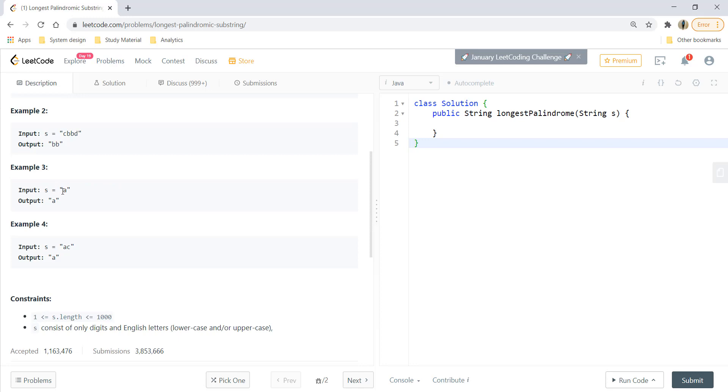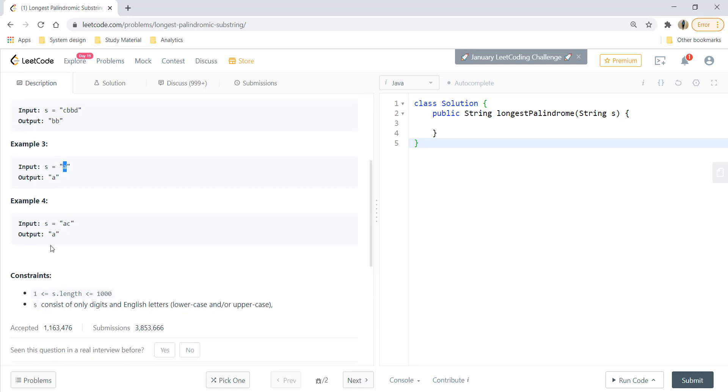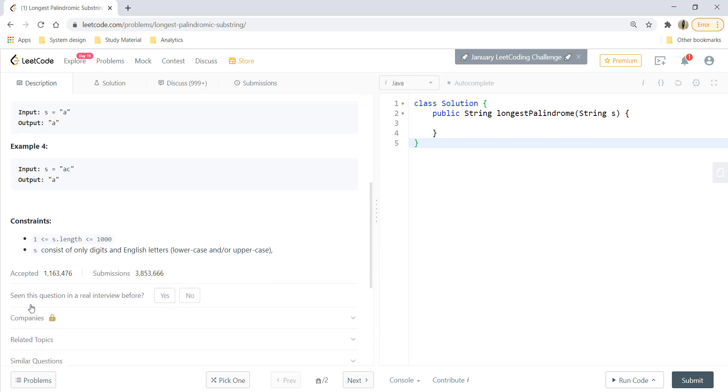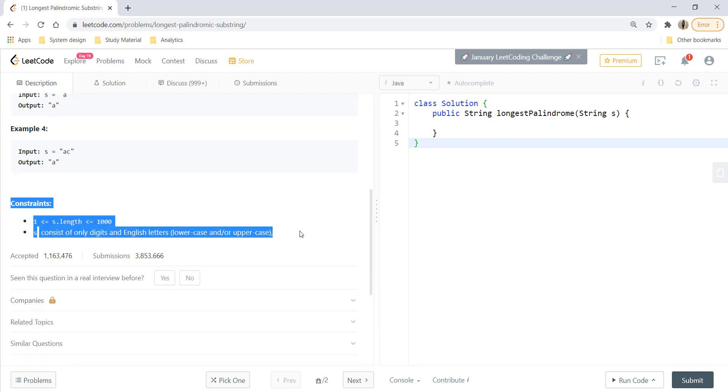For the third example, the string of length 1 is itself a palindromic string and so we return the string itself. For example 4, any one of the characters can be termed as a palindromic string and so we can return either a or c in this case. The constraints attached with this question are that the length of string can be between 1 to 1000 and it will only consist of English letters lowercase and/or uppercase.